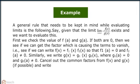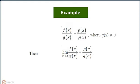First, we check the value of f(a) and g(a). If both are 0, then we see if we can get the factor which is causing the terms to vanish. That is, if we can write f(x) equals to f1(x) into f2(x) so that f1(a) equals to 0 and f2(a) not equals to 0. Similarly, we can write g(x) equals to g1(x) into g2(x) where g1(a) equals to 0 and g2(a) not equals to 0. Cancel out the common factors from f(x) and g(x) if possible, and write f(x) divided by g(x) equals to p(x) divided by q(x) where q(x) is not equal to 0. Then limit x tending to a f(x) divided by g(x) equals to p of a divided by q of a.